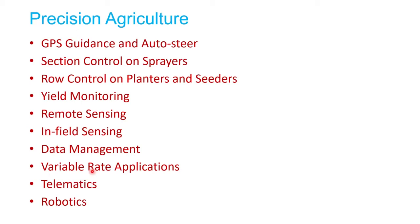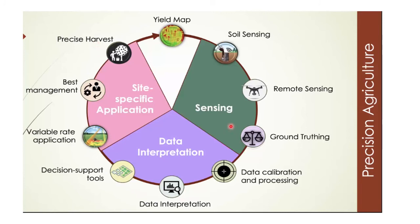Everything that makes our farming system more accurate and more controlled is part of precision agriculture. Remember these two words: accurate and controlled. We want to maintain accuracy and control our farming system based on data collected from different tools. Precision agriculture has three steps. The first one is sensing — collecting data — which could be soil sensing, remote sensing, or ground truthing.